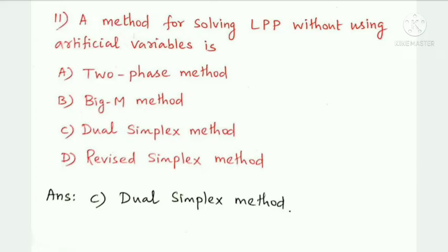Next question: a method for solving an LPP without using an artificial variable is — two-phase method, big M method, dual simplex method, or revised simplex method. The dual simplex method solves LPP without artificial variables. Option C is the answer: dual simplex method.